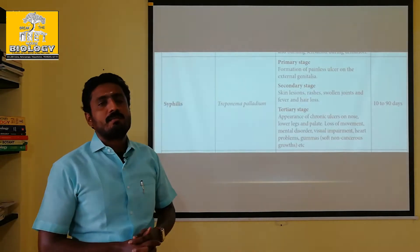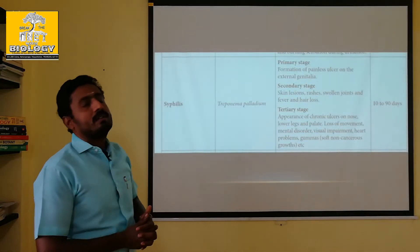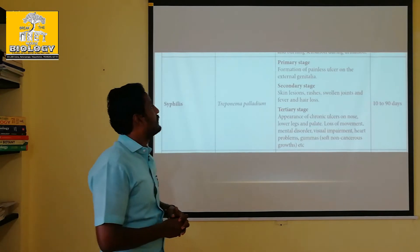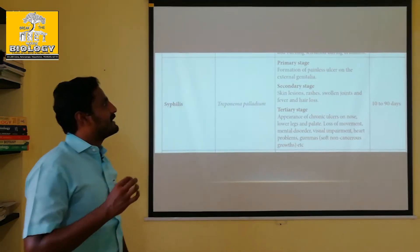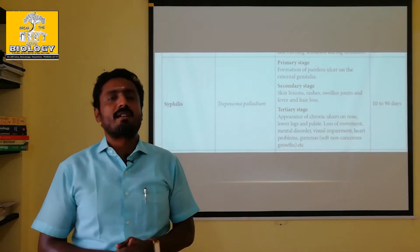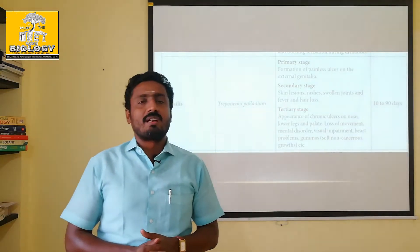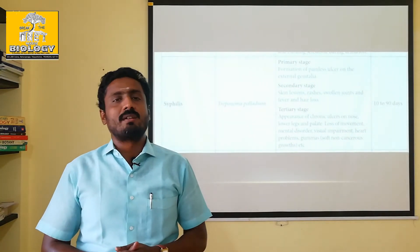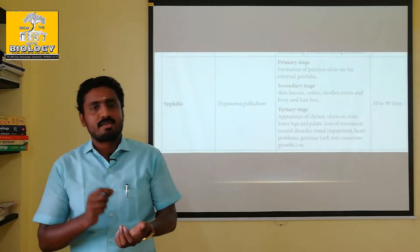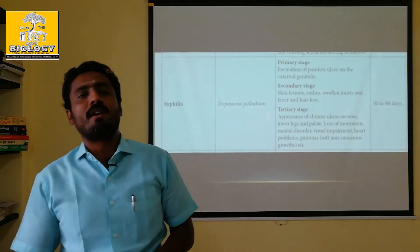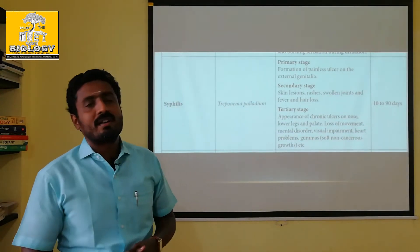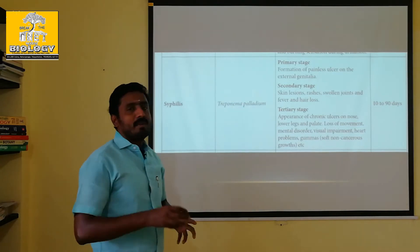In the state board zoology book, there is a table covering syphilis. In the primary stage, there is a painless ulcer on the external genitalia. An ulcer is a rupture or damage to the skin. The external genitalia develops this ulcer in the primary stage.